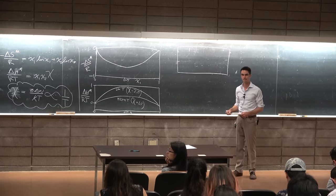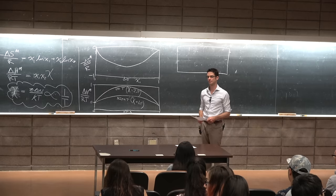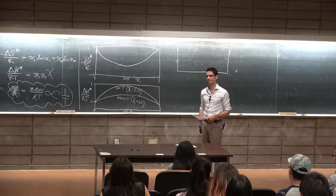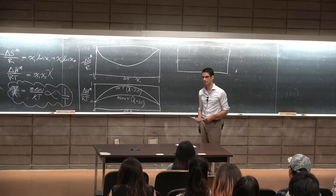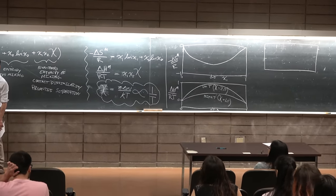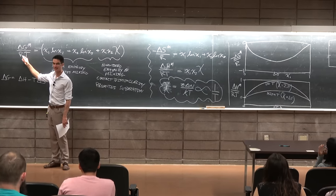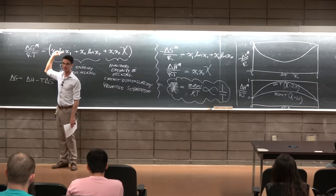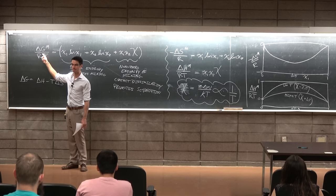Student question: at the end of last class you defined total Gibbs free energy over RT as a sum of functions of n with kT, and at the start of this lecture you expressed it differently in terms of x. Were those equivalent? Yes — if ΔG is in units of energy per mole, then dividing by RT gives a unitless quantity equal to all the terms on the right. If ΔG is per molecule divided by kT, it's the exact same unitless quantity. So n versus x doesn't matter — the ratio is the same.